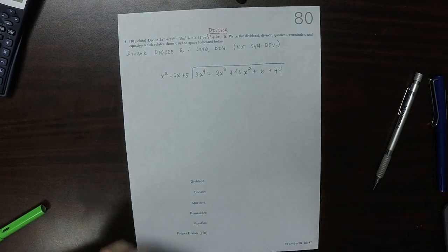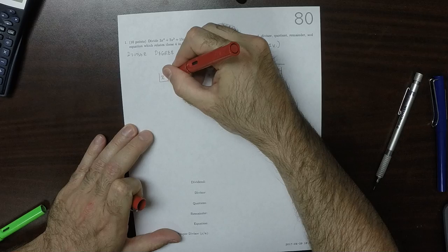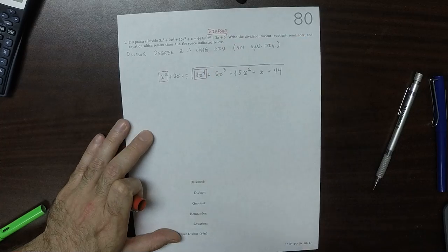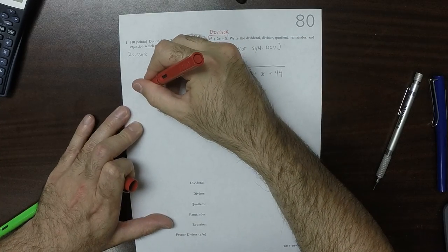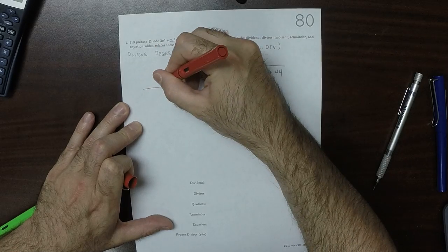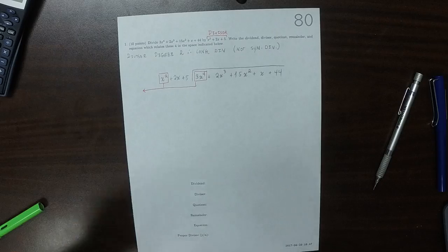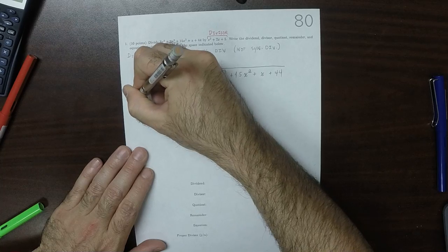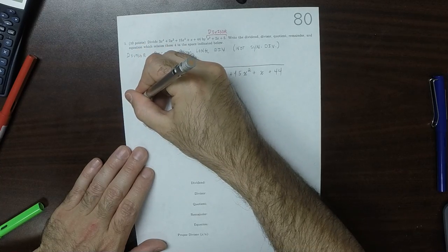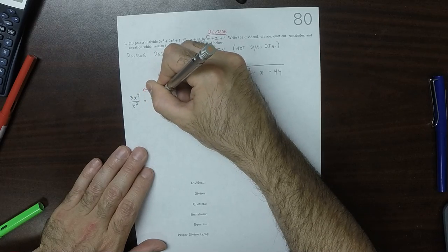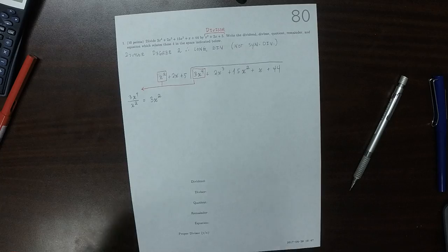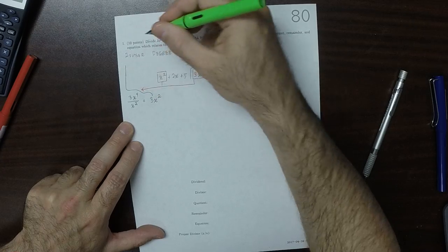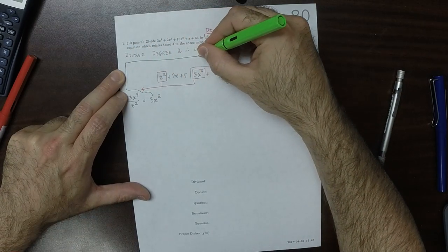The leading term outside is x squared, and the leading term inside is 3x to the 4. 3x to the 4 divided by x squared is 3x to the 2. That partial quotient goes to the top of the house to be recorded.